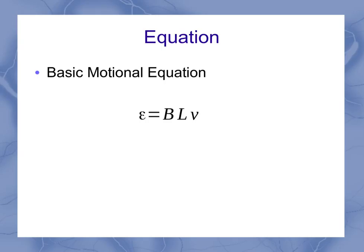This is a basic Motional EMF equation. In this case, your magnetic field, the length, which is your wingspan, and your speed are all perpendicular to each other. And we're solving for the EMF.